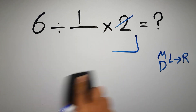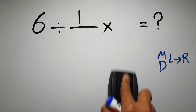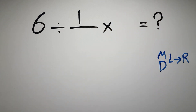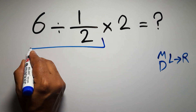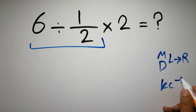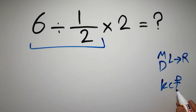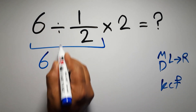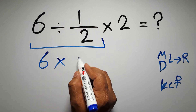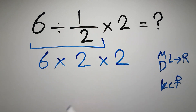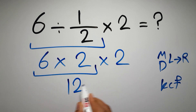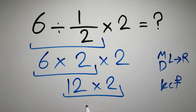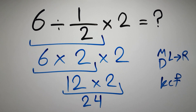So first we do this division: 6 divided by 1 over 2. According to the KCF rule — K stands for keep, C stands for change, and F stands for flip — we keep the first fraction, change division to multiplication, and flip the second fraction. And here we have times 2, so 6 times 2 times 2: 6 times 2 is 12, and 12 times 2 gives us 24. This is our final answer to this problem.